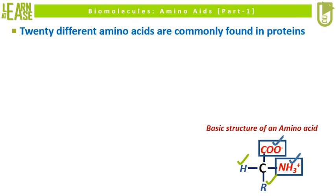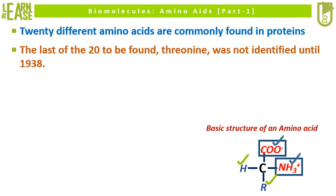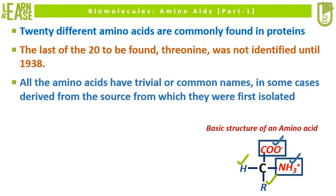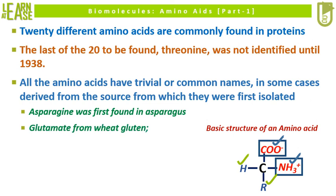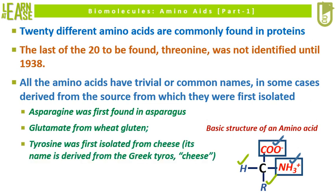20 different amino acids are commonly found in proteins. The last of the 20 to be found, threonine, was not identified until 1938. All the amino acids have trivial or common names, in some cases derived from the source from which they were first isolated. For example, asparagine was first found in asparagus, glutamate from wheat gluten, and tyrosine was first isolated from cheese — its name derived from the Greek word 'tyros,' which means cheese.